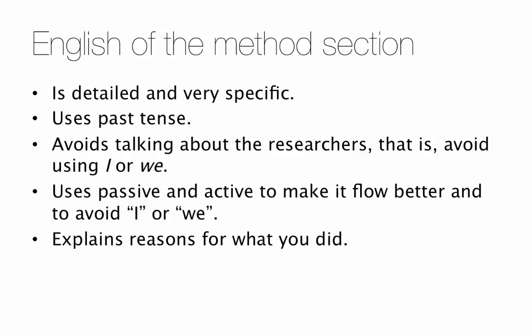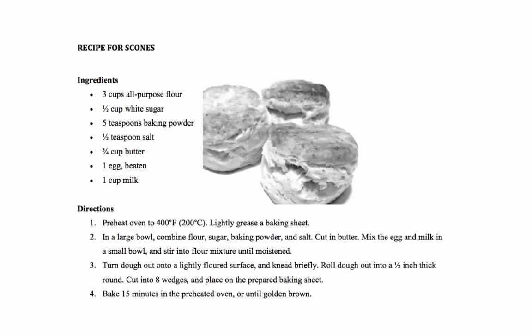The Methods section also explains the reasons for the choices you made in your experiment. Here's a quick example to talk about active and passive. This is a recipe for scones. The reason I'm showing you this is because a lot of students make the mistake of making their Methods sound like a recipe. But the Method is not a recipe for your experiment.